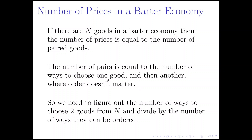That's going to be equal to the ways to choose one good and then a different good, where the order doesn't matter. For example, if you choose apples first and then bananas, that's the price of apples in terms of bananas. And once we know that price, we know the multiplicative inverse would be the price of bananas in terms of apples. So if the price of apples in terms of bananas is three — you pay three bananas to buy an apple — then the price of bananas in terms of apples would be one-third. So we're not going to do that kind of double counting; once we know one price, we know the inverse.